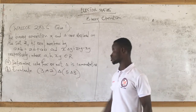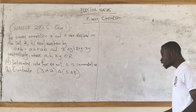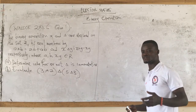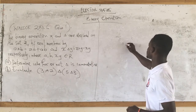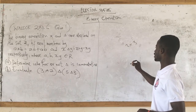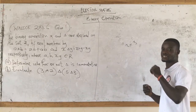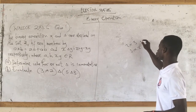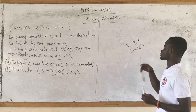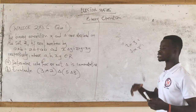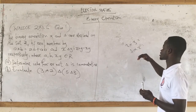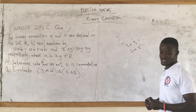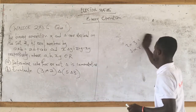Part (a) asks us to determine whether or not delta is commutative. Let me first talk about what commutative means. For instance, two times three — when we say commutative we interchange the positions, so that's three times two. Two times three equals six and three times two equals six, so they are commutative.